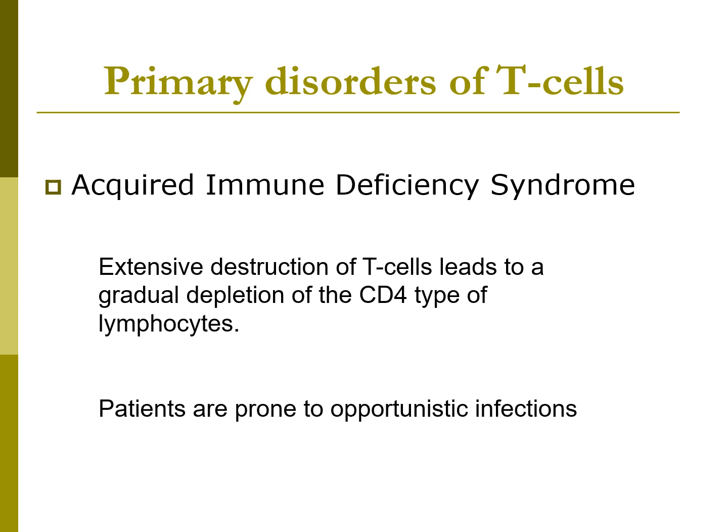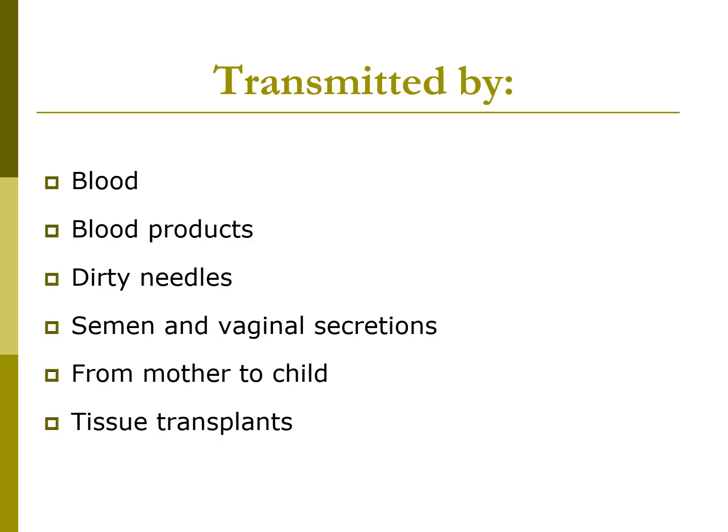Patients succumb to opportunistic infections. HIV can be transmitted by blood, blood products, dirty needles, semen, and vaginal secretions. It can be acquired from mother to child or through tissue transplants. It is not transmitted by casual contact. There is no evidence of mosquito transmission or transmission by any human serum-made vaccine. The virus can be isolated in blood and breast milk, but the highest concentration is in semen. It has been isolated in saliva and tears, but there is no evidence it has ever been transmitted by those routes.